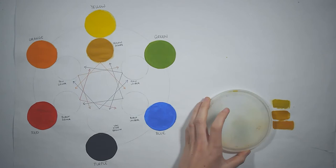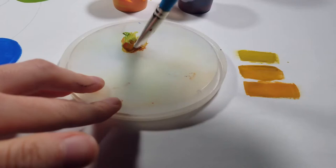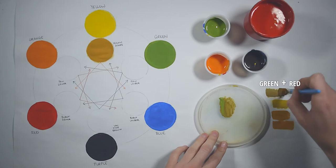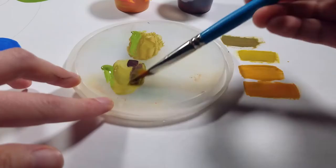Continuing around the wheel for raw umber, we start with green as our base and mix in orange and purple rather than red, the complement of green. In this instance, green and red make a fairly decent raw umber, but orange and purple create a much more accurate color.